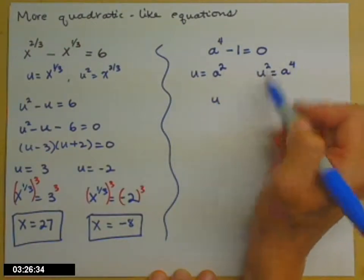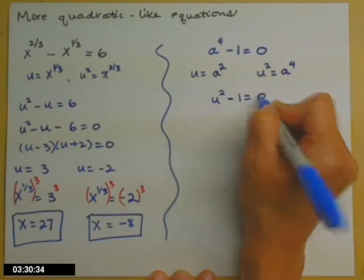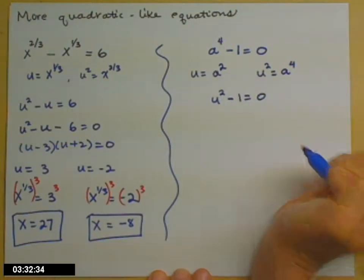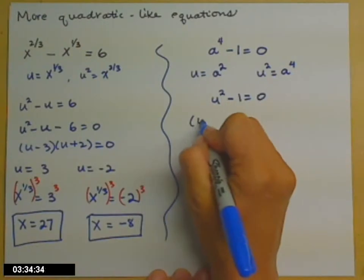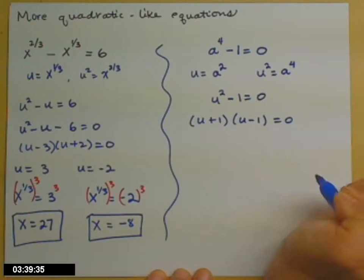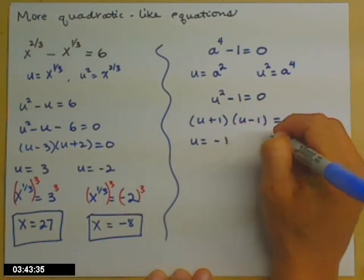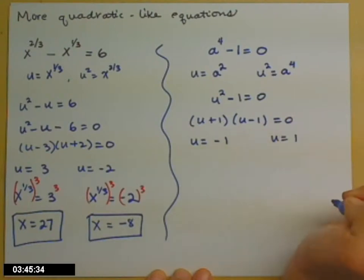So a to the fourth is the same thing as u squared. So now I have u squared minus one equals zero. I'm going to factor that. So u plus one times u minus one equals zero, which gives us the answers of u equals negative one and u equals positive one.